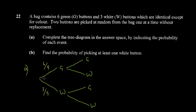In the first pick, the probability of green is 6 over 9 and the probability of white is 3 over 9 — these add to 1. After picking a green one first, we have 5 green buttons left out of 8 remaining, so the probability of green next is 5 over 8, and white is 3 over 8.